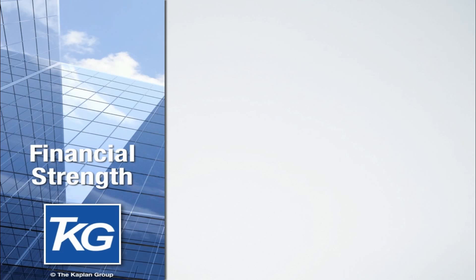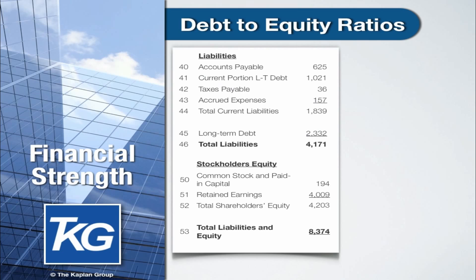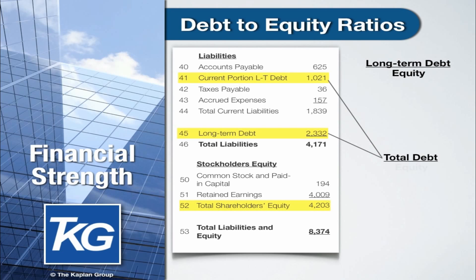After evaluating liquidity, the next thing to look at is financial strength. The most common ratios to look at here are a couple different debt to equity ratios. The first one is long term debt divided by equity, and the other ratio is total debt divided by equity. When we talk about debt here, we are talking about interest bearing debt — that means loans and bank revolving lines of credit. We are not talking about non-interest bearing liabilities such as accounts payable. Equity is the amount of money that shareholders have invested in the company plus net income that has been earned and retained over the years.